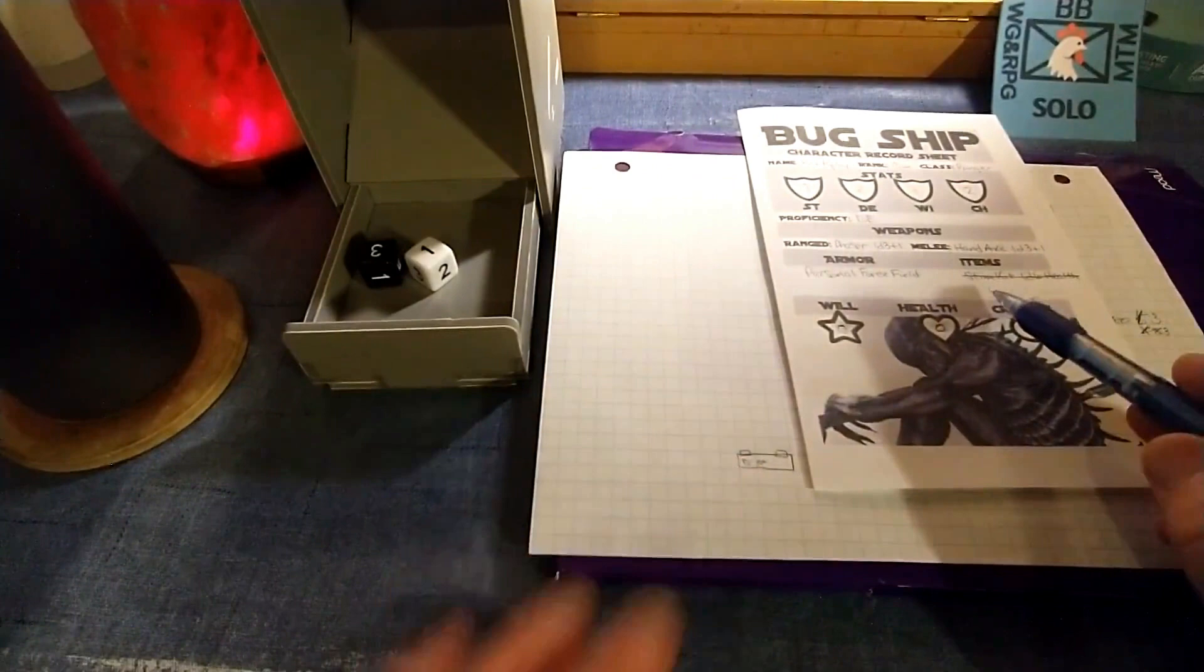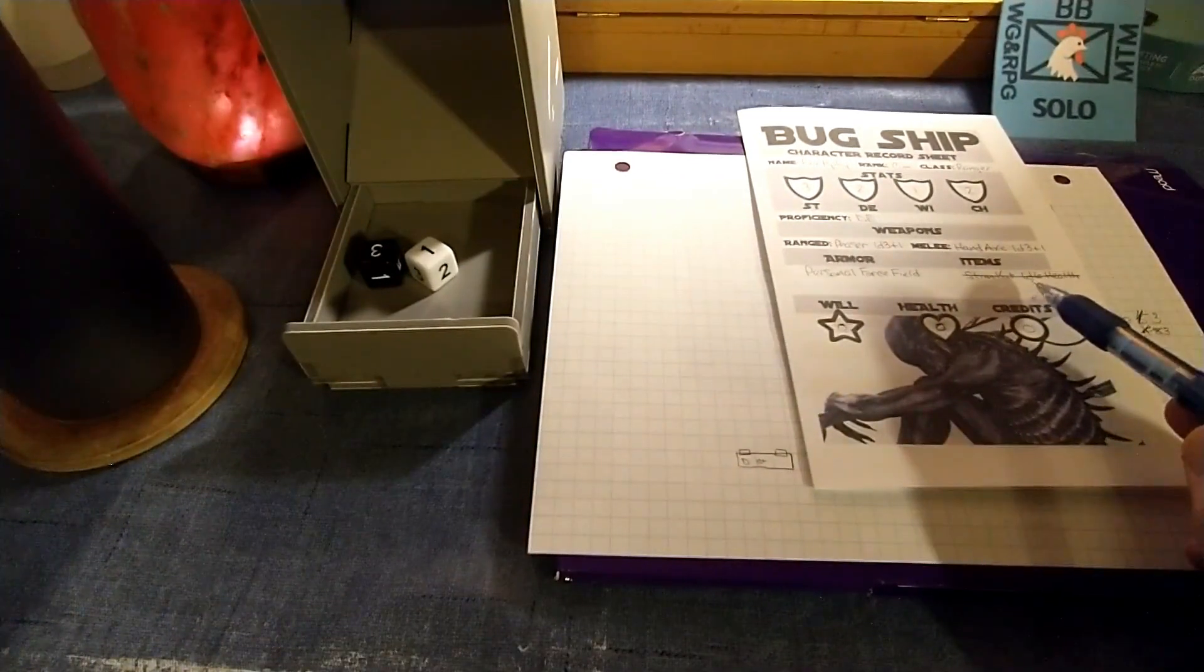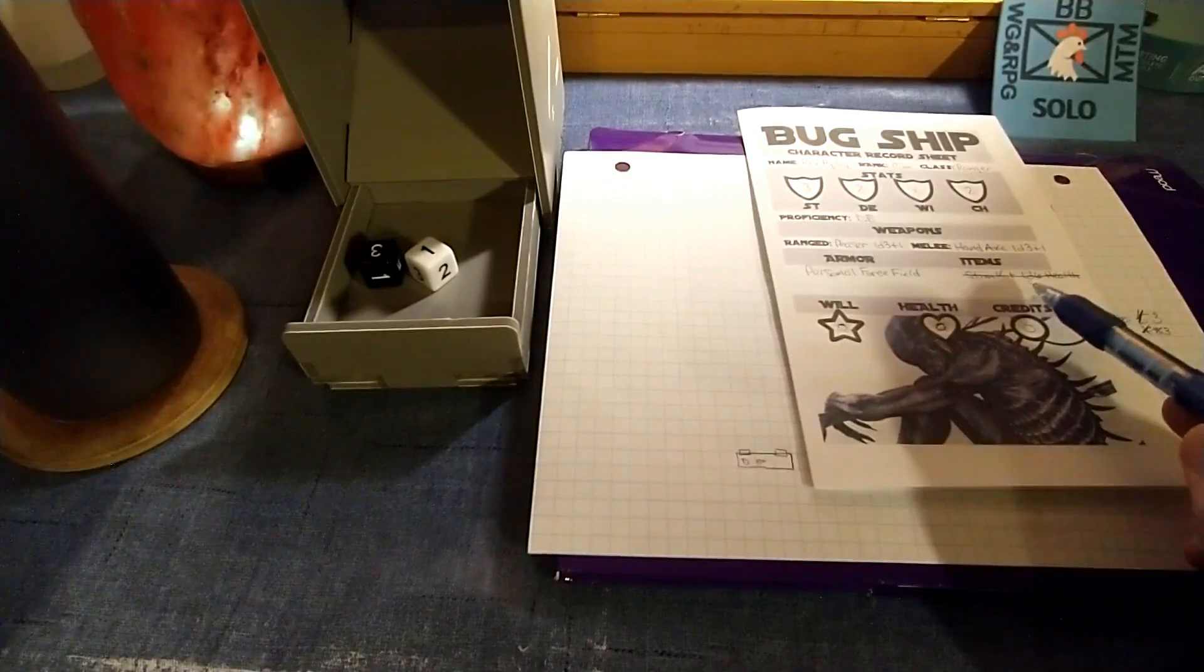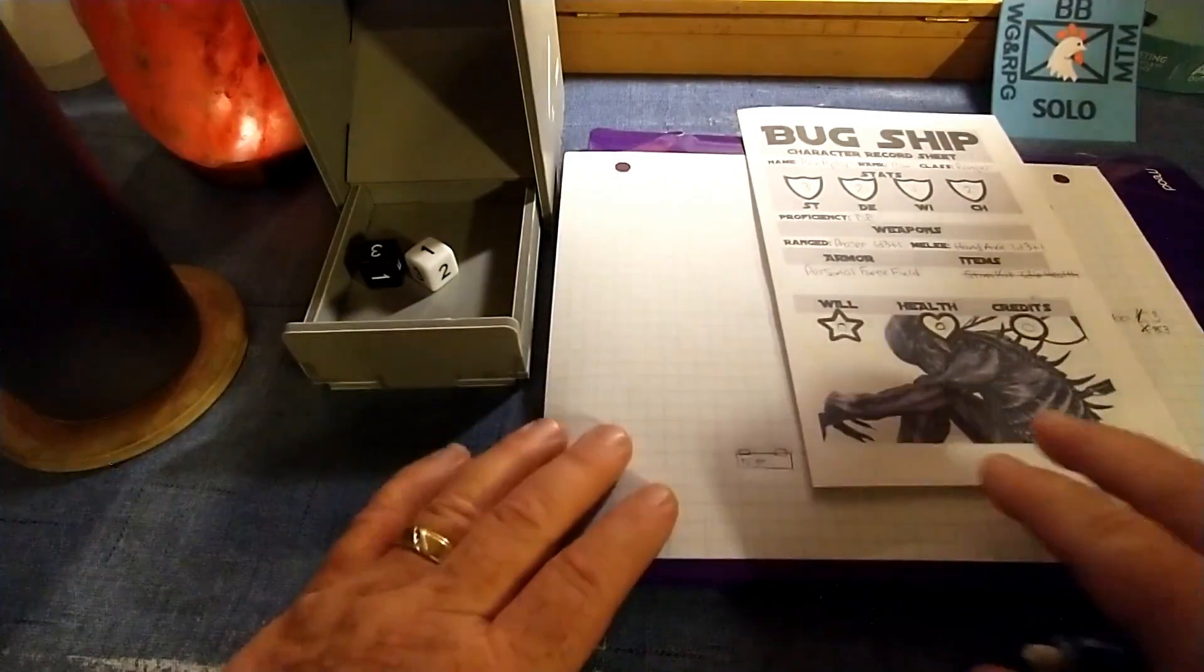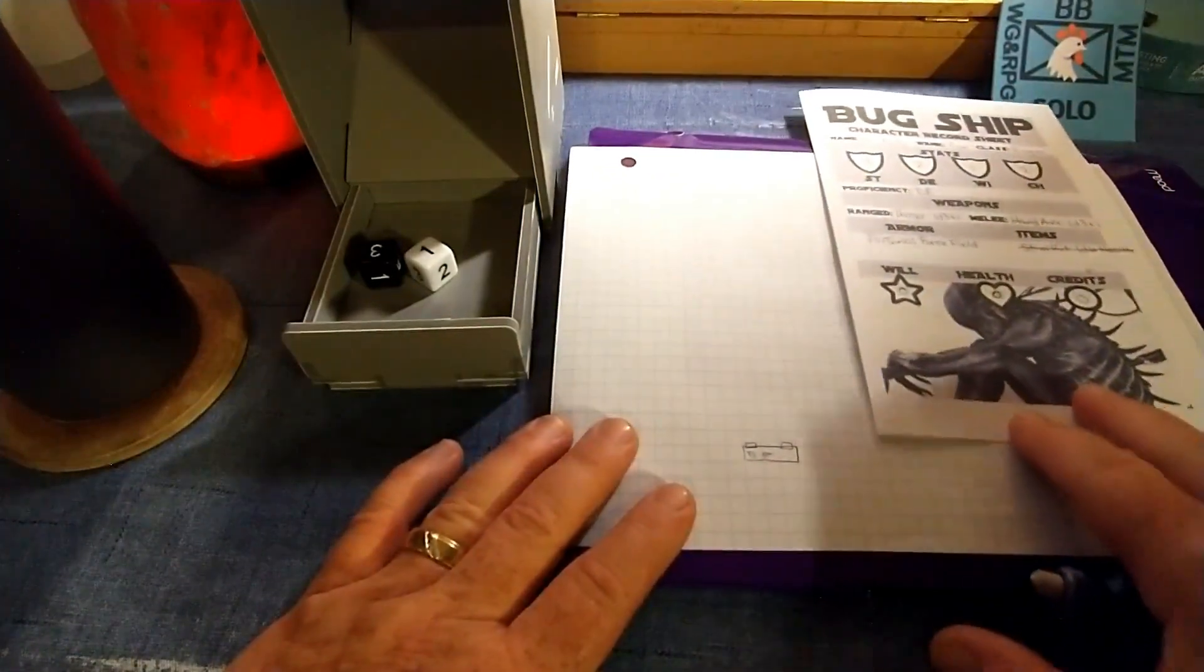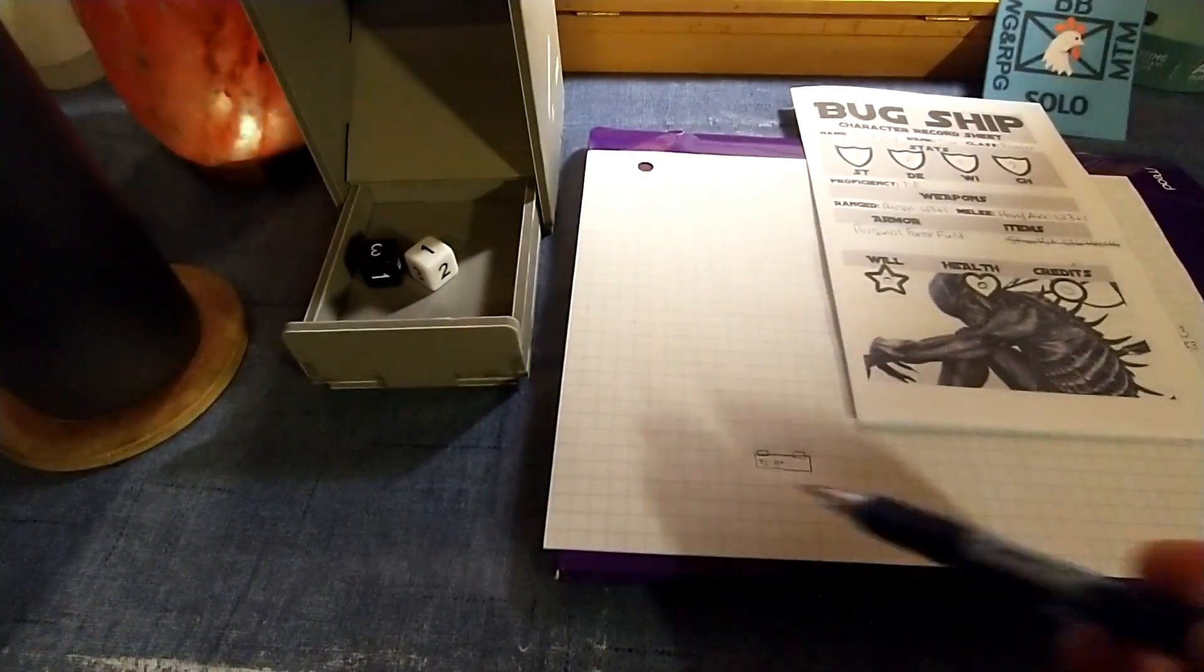I did use the stim kit, and I mistakenly said in the last video that would increase your life points by 6. That is not true, it is a 1D6 roll. I did use that, it just basically prolonged the inevitable, and as I said, he succumbed to his injuries.